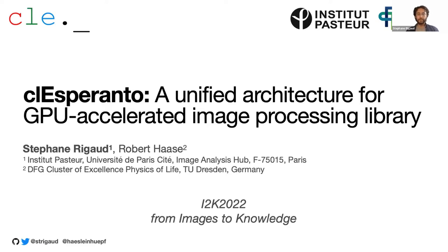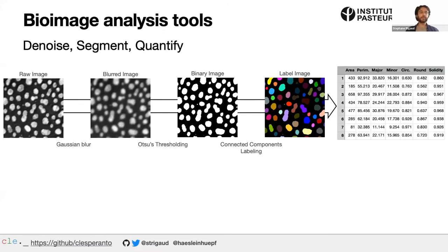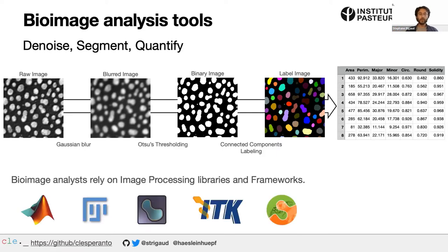In terms of bioimage analysis, we all use pipelines — that's how people create bioimage analysis quantification. If we go for the lowest possible image analysis pipeline, I would go for Gaussian blur to denoise, automatic thresholding, and connected component labeling to identify objects, and then extract quantification — the classic denoise, segment, quantify workflow.